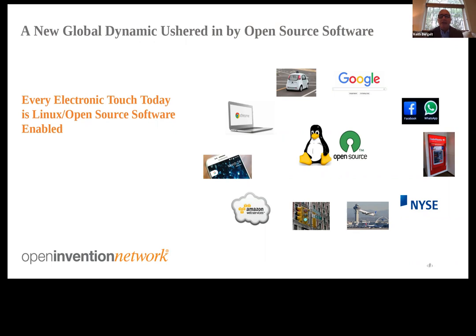Every social media platform, whether based in Asia, the US, or Europe, is running on open source software. Every ATM transaction, every mobile payments transaction in China or elsewhere in the world utilizes that functionality. Autonomous driving platforms being developed by Daimler, Baidu's Apollo platform, and others are being developed in open source. Chromebooks and Android are fundamental open source platforms built on top of the kernel.